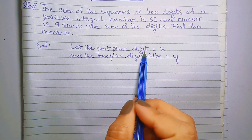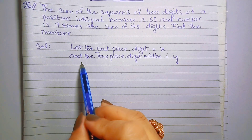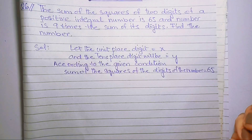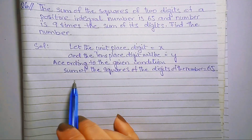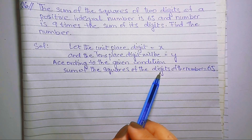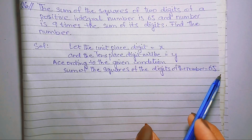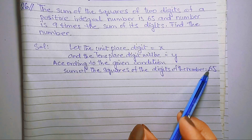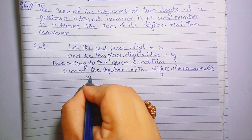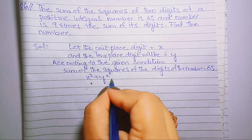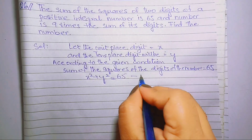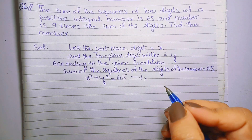Solution लिखके conditions नीचे उतार लेते हैं। Let the unit place digit be x, then the 10th place digit will be y। According to the given condition, sum of the squares of the digits of the number वो 65 के बराबर था, तो x square plus y square equals to 65 — इसको equation number 1 का नाम देते हैं।